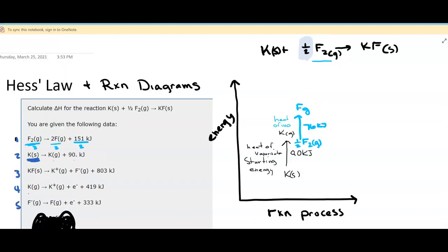This is a salt, potassium fluoride that we're forming. To form potassium fluoride salt, we need to have our reactants as ions, not as atoms.